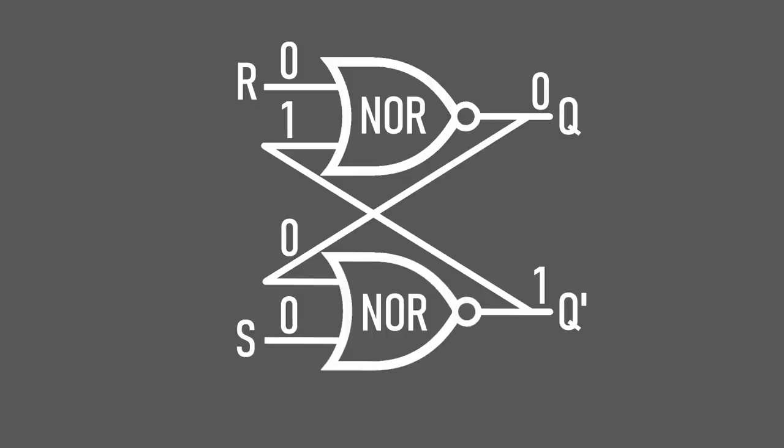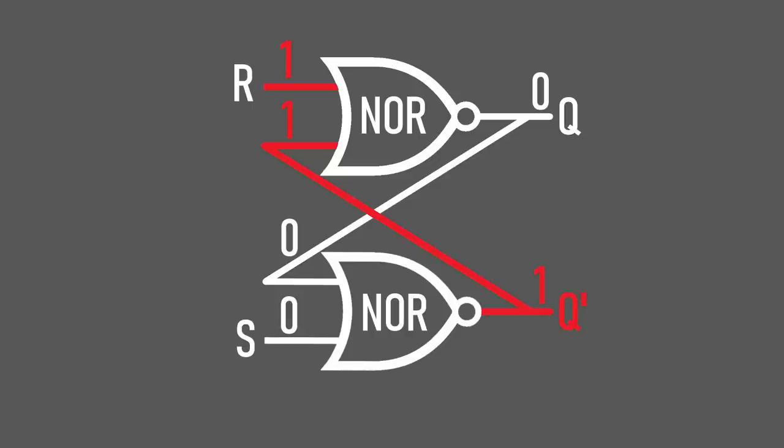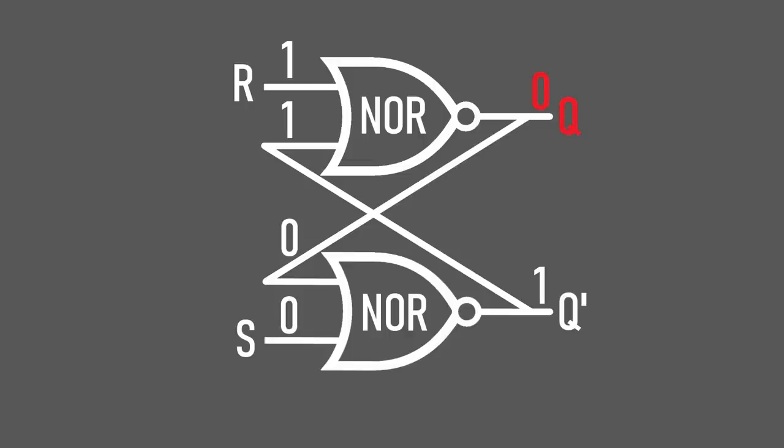We still aren't quite done yet, as there are three other cases to look at. Right now we have our output line off or reset. What happens if we try to reset an already reset latch? If we turn on the reset line now, we can see that both lines going into the NOR gate are on. This means the output of the gate should be off, since at least one of the inputs are on. Well, it already is off, so nothing changes.